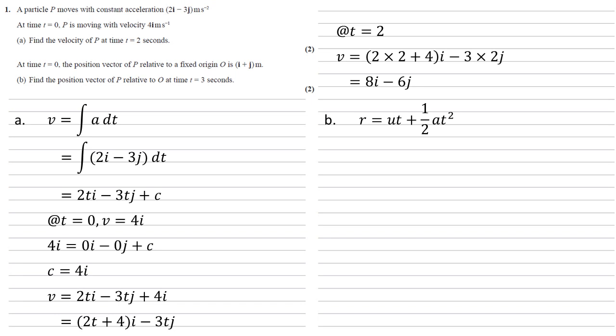So substituting what we know into there, we've got our initial position of i plus j. We're then going to add on the ut plus half a t squared of our formula to that. So our initial velocity was 4i times by the time of 3 and plus a half times our initial acceleration of 2i minus 3j times by the time squared. So 3 squared.